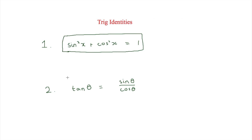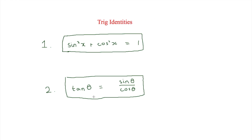The other identity is tan theta. Theta and x are normally interchangeable and you can use them whenever you want, however for this one I've used theta. Tan theta is equal to sine theta over cos theta. Remember these and we will now use them in some questions.